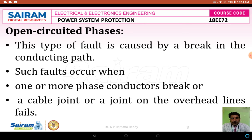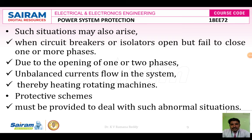Between two successive poles, if an insulator breaks down at any one pole and the conductor does not touch the ground or any other phase line, it is called an open-circuit phase fault. In this fault, the current is zero and the voltage is maximum. This situation may also arise when circuit breakers or isolators open but fail to close on one or more phases. Due to the opening of one or two phases, unbalanced currents may flow in the system, thereby heating rotating machines. Protective schemes must be provided to deal with such abnormal conditions, otherwise there may be a lot of damage to the system.